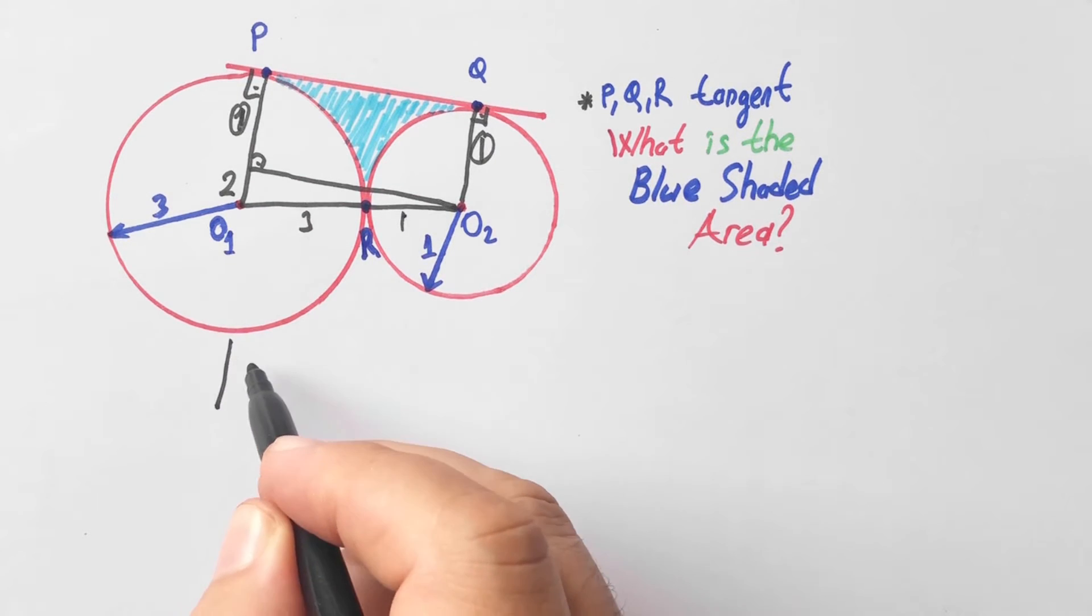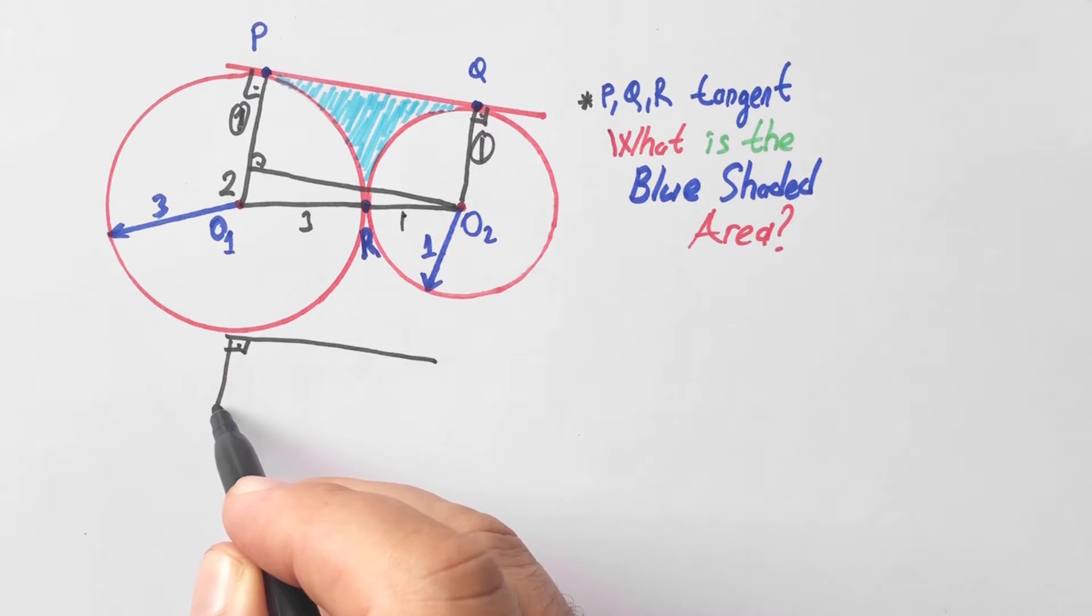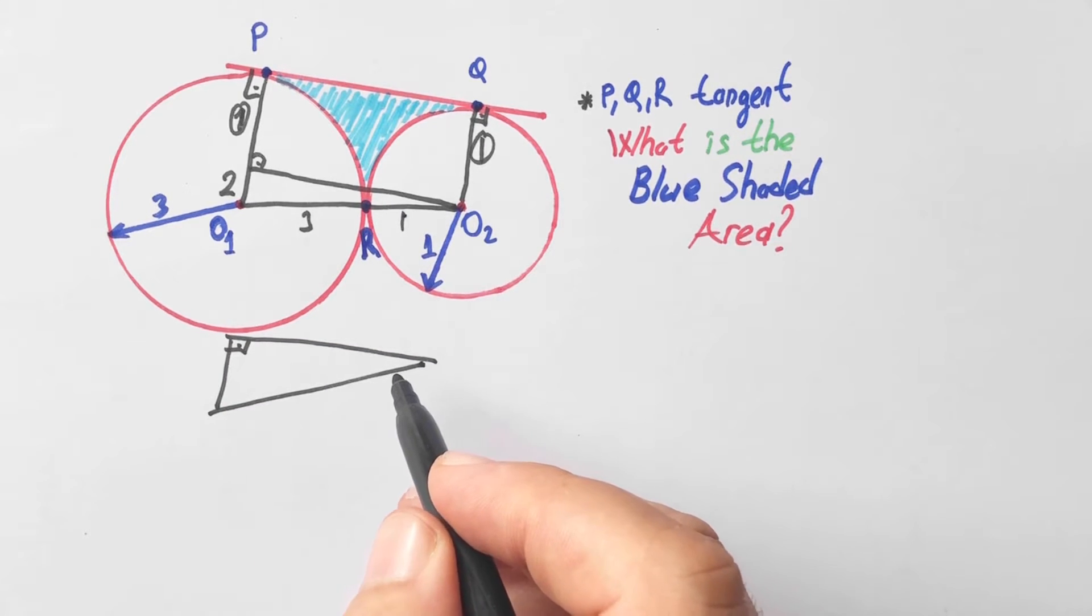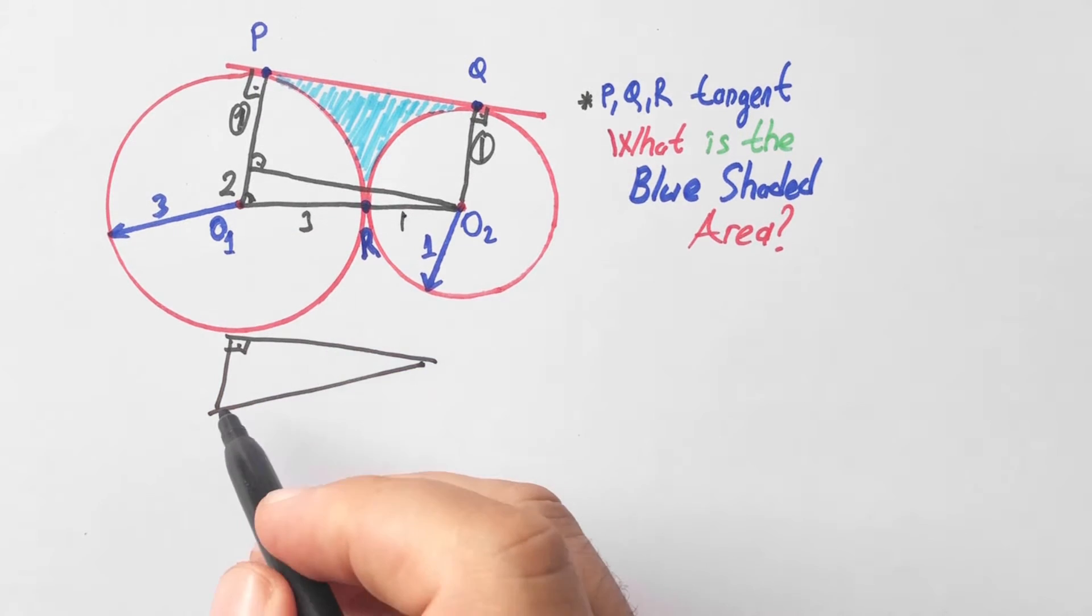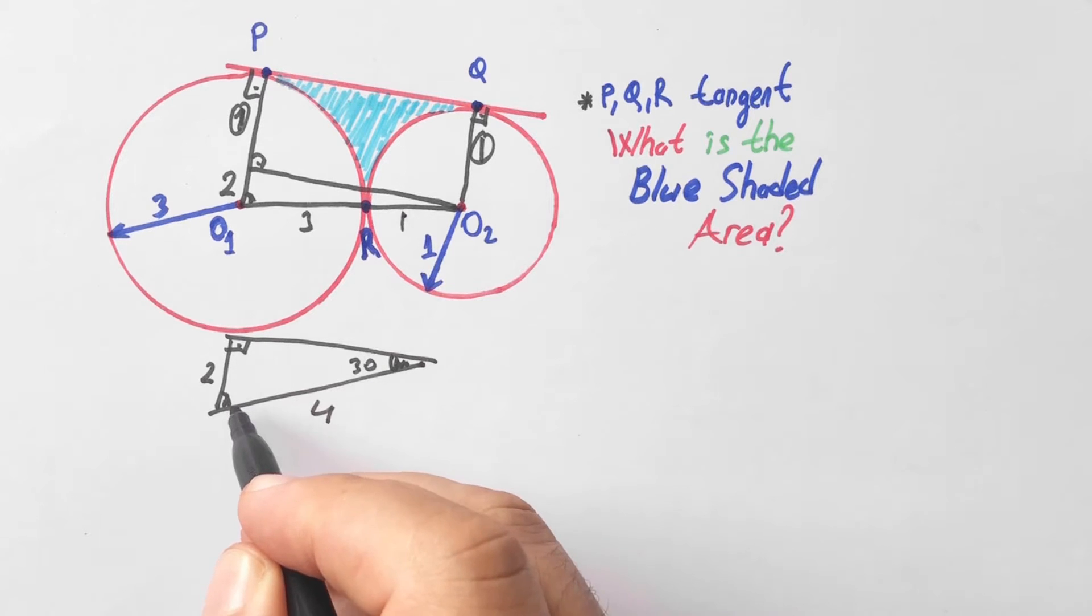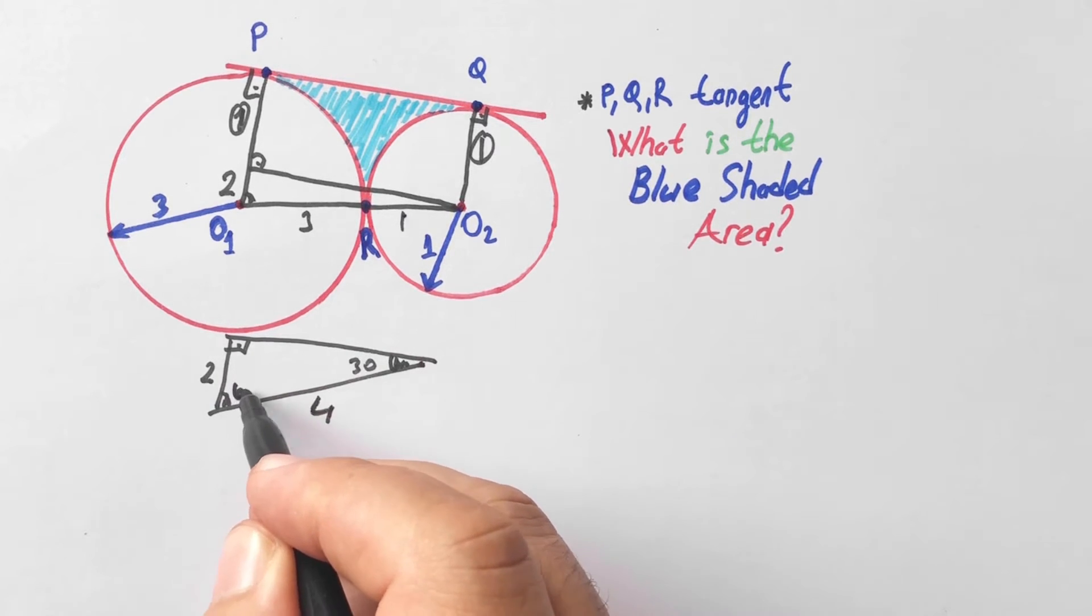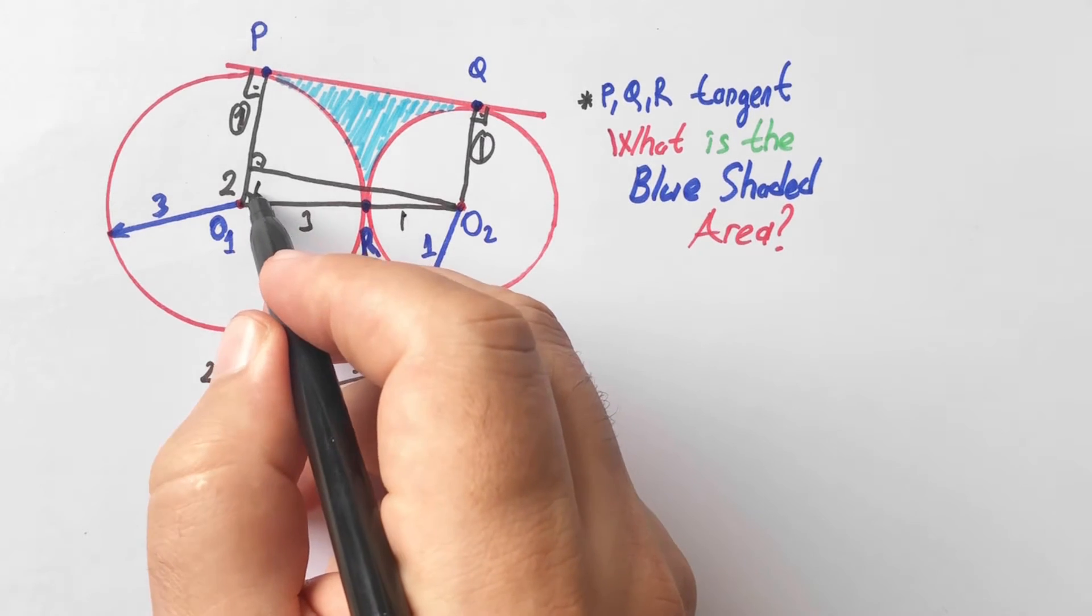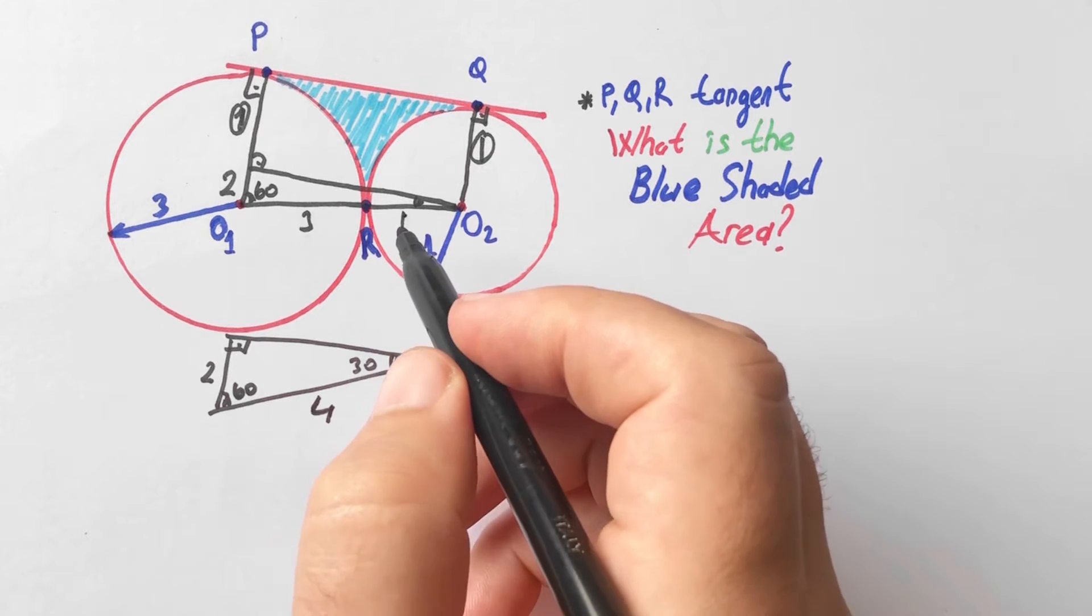If you focus on this triangle, let's draw here. These two angles are the same. Hypotenuse is four, that means this angle will be 30 degrees because hypotenuse is two times the side. So here is 60 degrees and here is 30 degrees.